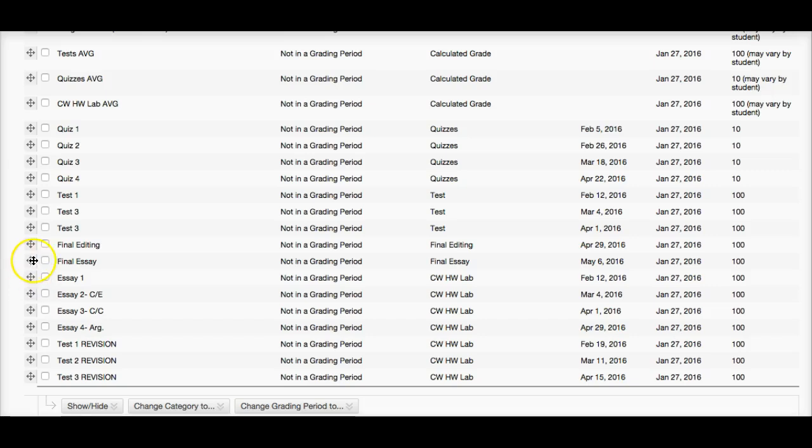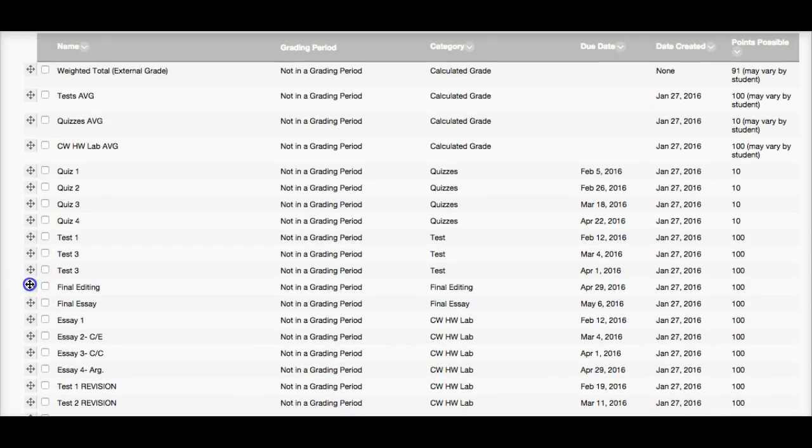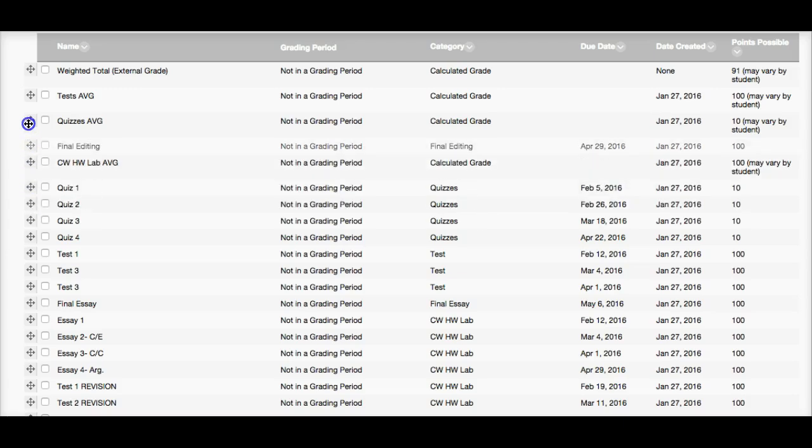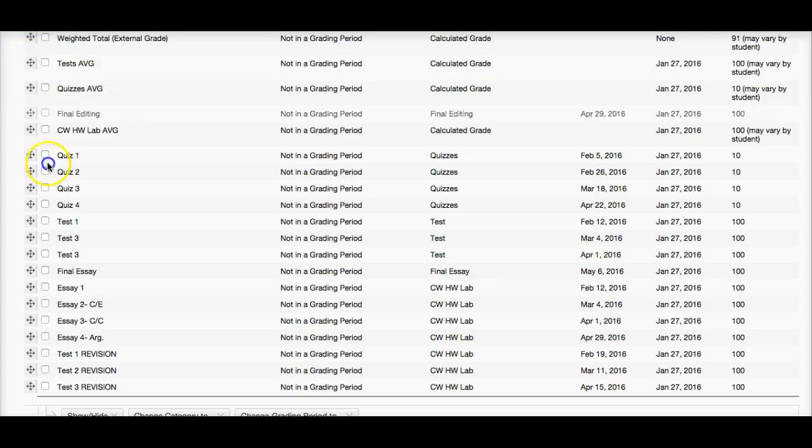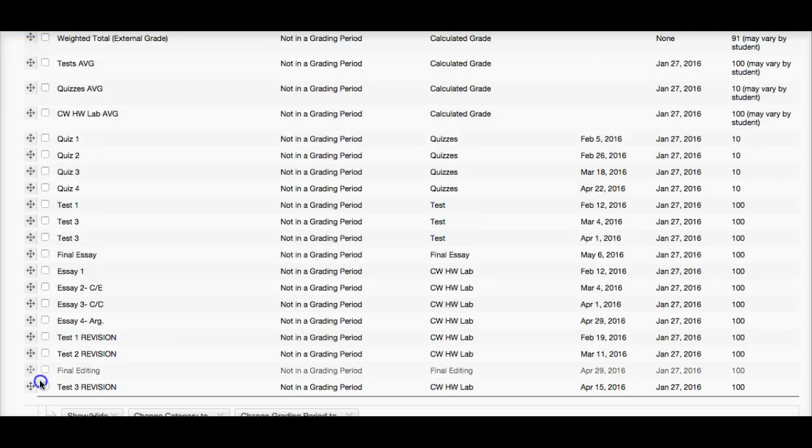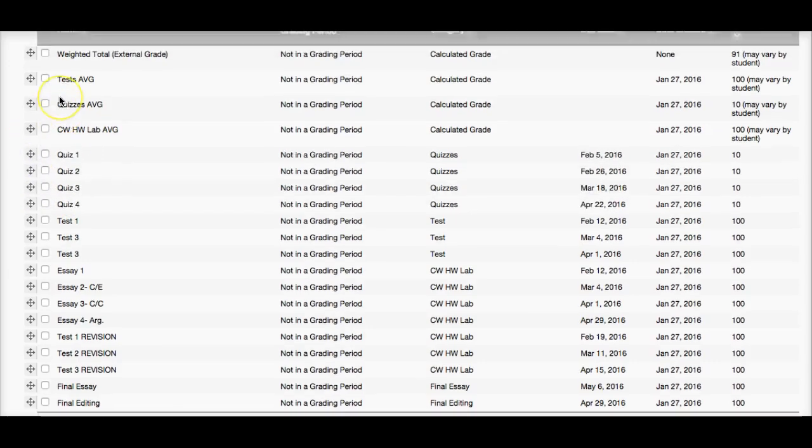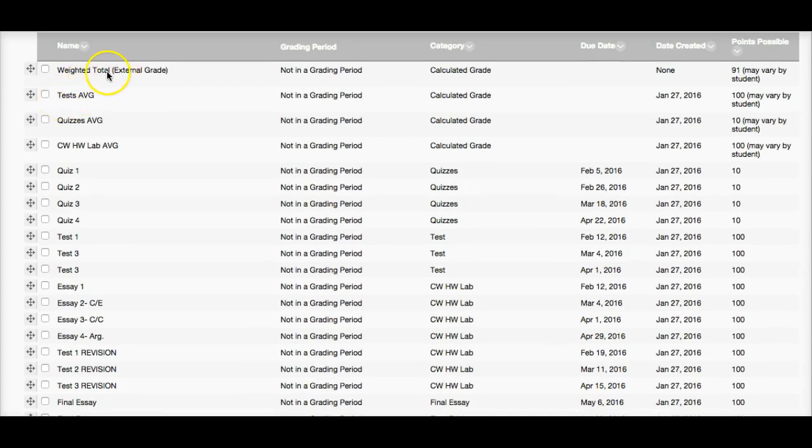And if you want to reorder the assignments, you can just drag them up and down. So maybe you want the final editing at the top or actually the final exam is probably not here. It's not till the end of the semester. I might want to put that at the end. The final editing I could put at the end. Quizzes are already grouped. So you can just move things around if you like. I like to have the weighted total right at the front. All my averages right at the front. And then you can organize it the way you like.